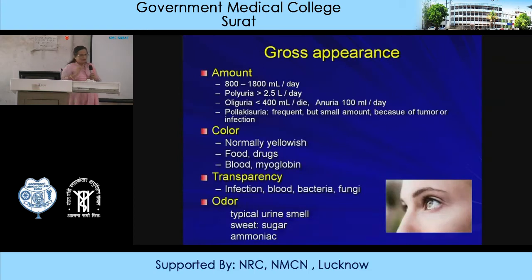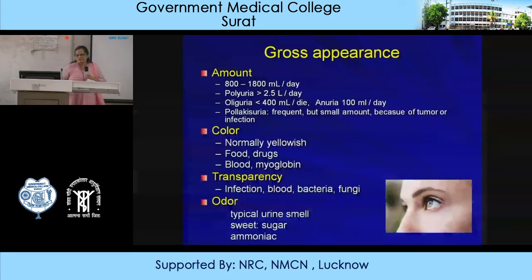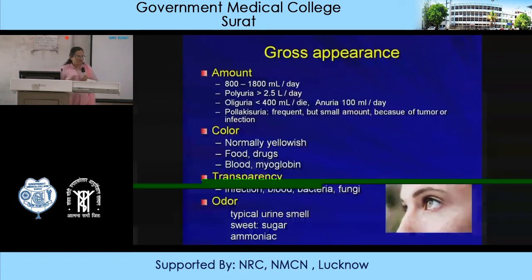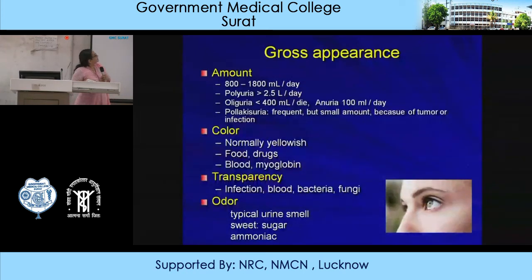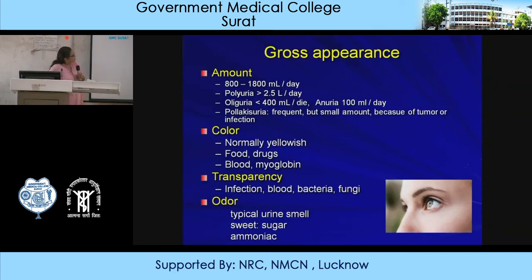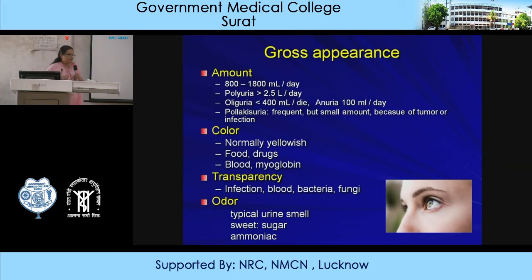In gross appearance, we first look at the amount of urine - normally about 1000 to 1800 ml per day. Polyuria is more than 2.5 liters per day, seen in nephrosclerosis, diabetes, and pregnancy (where it is physiological). Oliguria is less than 400 ml per day, and anuria is about 100 ml per day. Pollakiuria means frequent but small amounts due to some tumor or infection. Urine is normally yellowish in color due to bile pigments and urochrome.